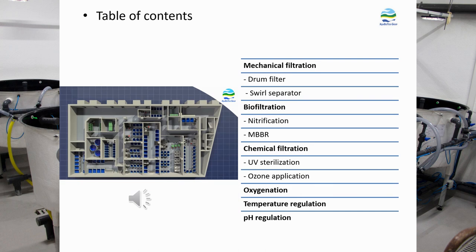In mechanical filtration, the two main components most commonly used in aquaculture are the drum filter and the swirl separator. In biofiltration we will touch upon the nitrification process, focusing on the moving bed biofilm reactor. In chemical filtration I will describe how UV sterilization works, how ozone is applied for disinfection, and also cover oxygenation, temperature regulation, and maintaining stable pH.